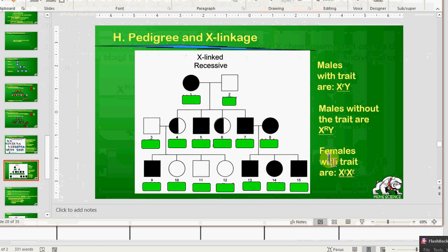And then the third thing you figure out are females that have the trait. So females that have the trait are going to have two X chromosomes, and if it's a recessive trait, they're going to be both lowercase letters for that trait.